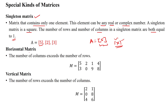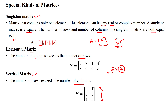Another special kind is the horizontal matrix, where the number of columns exceeds the number of rows. For example, a matrix with two rows and four columns — number of columns greater than number of rows — is called a horizontal matrix. Another one is the vertical matrix, where the number of rows exceeds the number of columns; the vertical size is higher than the horizontal size. These are all special kinds of matrices used in machine learning and deep learning applications.